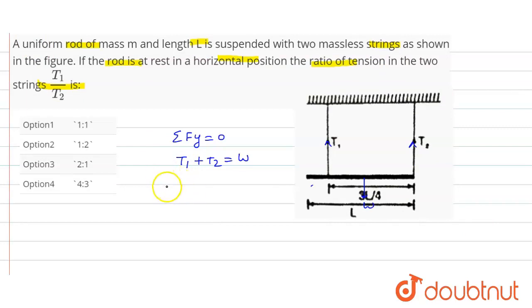Taking moment about point O. This is our point O. Clockwise moment is equal to anticlockwise moment.